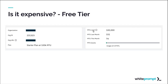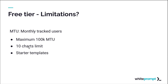Some important facts about Amplitude: the free tier allows you to track monthly tracked users — up to 100,000 per month. At the beginning of a project this can be very useful. As your users grow, you can decide whether to stay on the same service or move to another, since Amplitude allows you to export that data. Another limitation is that on the free tier you can only create 10 charts, which is quite restrictive.